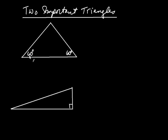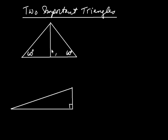This triangle has angles of 60, 60 — and if all angles add to 180 for any triangle, that means this angle must be 60 as well. So what I'm going to do is draw a perpendicular bisector starting at this vertex. I'm going to bisect that angle and draw a line segment that will also bisect the opposite side. That creates a 90-degree angle here.